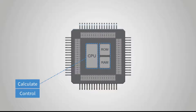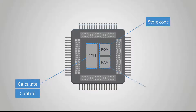The read-only memory ROM is used to store the programs compiled by the user. When the microcontroller is running, the CPU reads instructions directly from read-only memory. Temporary data generated during instruction execution, such as variables, are placed in random access memory RAM.